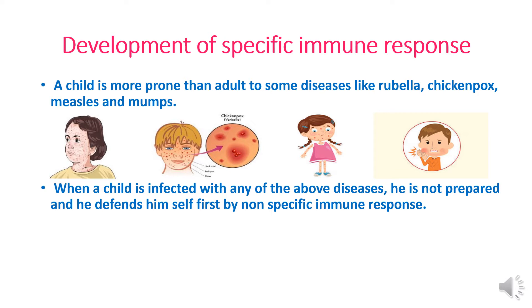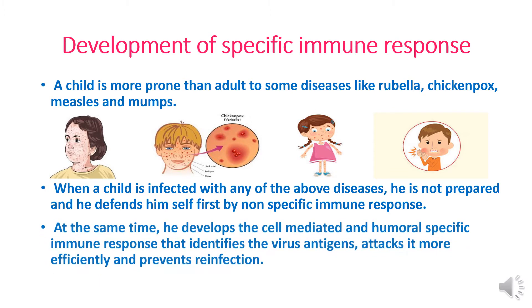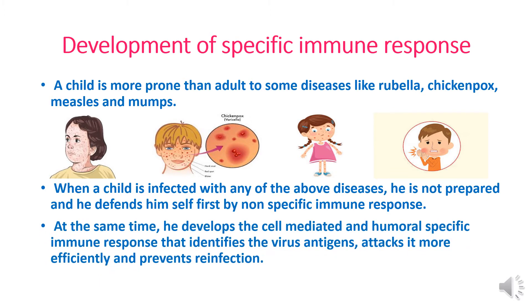When the viruses of these diseases enter the body, the macrophages start attacking them. At the same time, the body develops cell-mediated and humoral specific immune responses that identify the virus antigens, attack them more efficiently, and prevent reinfection. The B and T lymphocytes help the macrophages fight against these viruses.